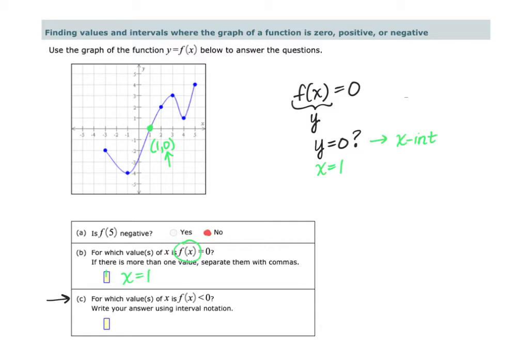However, on ALEKS, I believe you're just going to type in the value of 1 for Part B.